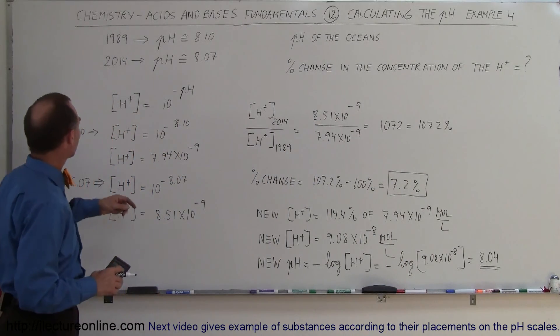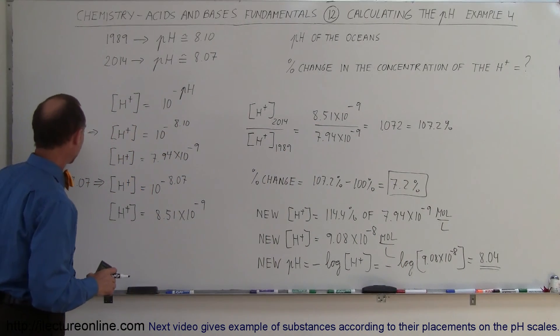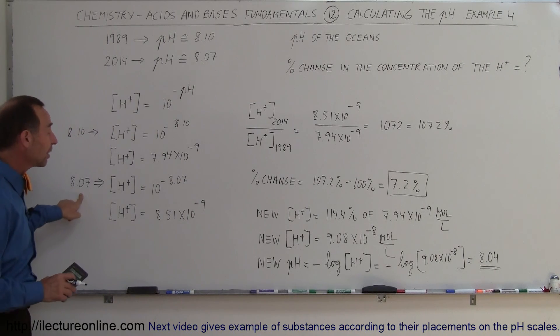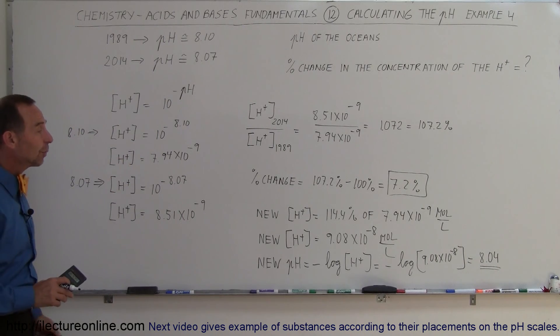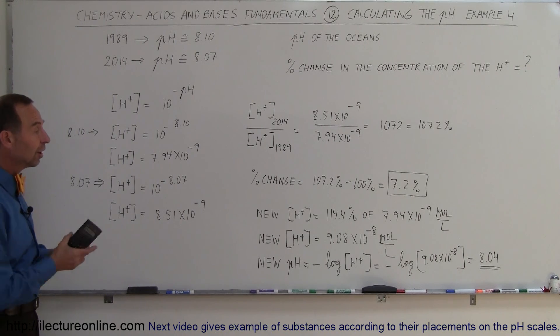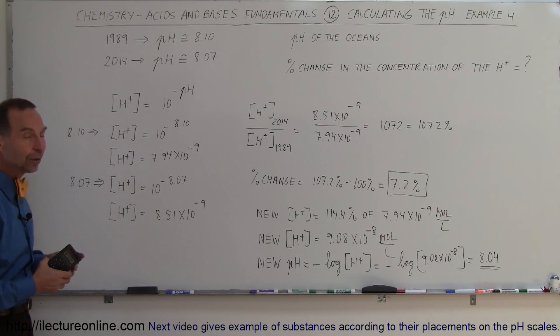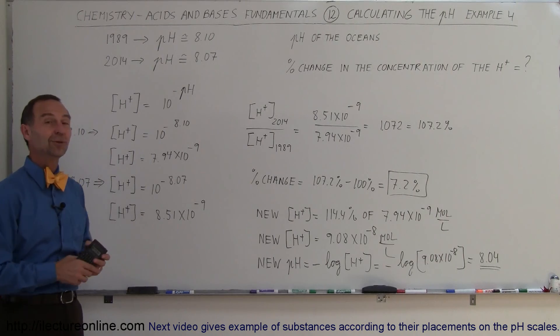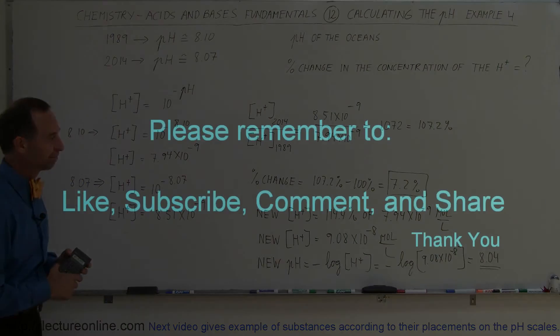So we started at 8.1, went down to 8.07 in about 25 years, and if the same rate continues, we have another 7.2% increase in the concentration of hydrogen, the pH of the ocean would now be down to 8.04. That's how we do that. Thank you.